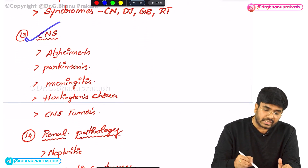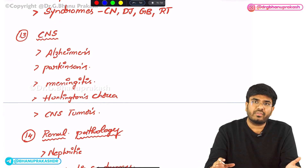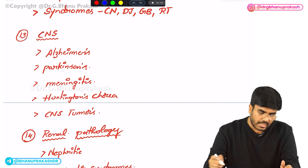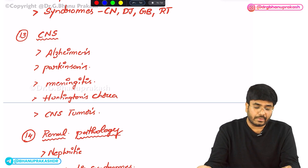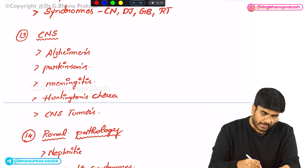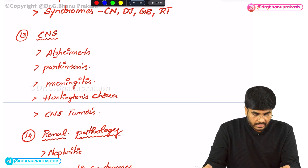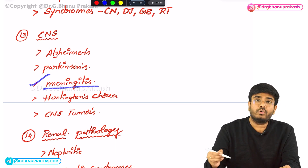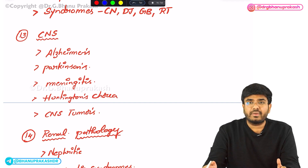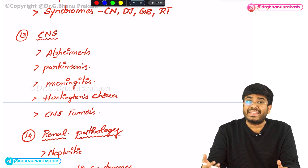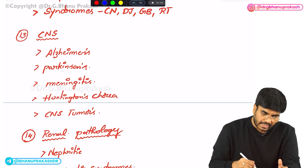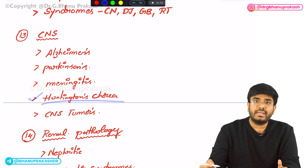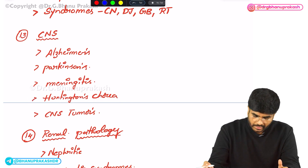In central nervous system pathology, the topic of dementia is important — know different disorders causing dementia like Alzheimer's disease and its histological appearance, and Parkinsonism. In meningitis, know how to differentiate bacterial, viral, and fungal meningitis, along with Kernig's sign and Brudzinski's sign. Huntington's chorea, a trinucleotide repeat disease, is also important.